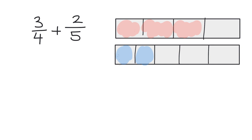So we need to make them the same. We're going to take each of these fourths and cut them into five pieces. We're going to take each of these fifths and cut them into four pieces. That's how we're going to guarantee that we get our common intervals. Let's do it in blue.